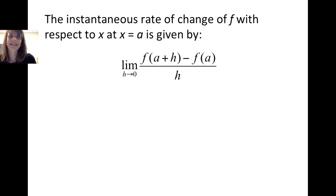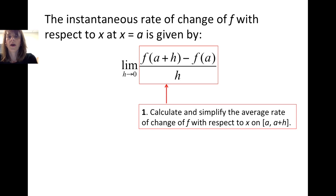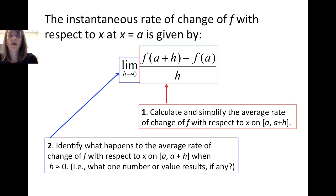Using limits, we can condense everything from the previous slide into a fairly simple, compact expression. The instantaneous rate of change of f with respect to x at x equals a is given by the limit of f evaluated at a plus h minus f evaluated at a, divided by h, as h goes to 0. In this expression we see those two steps. The difference quotient tells us to calculate the average rate of change, and the limit out in front tells us to identify what happens to that average rate of change when h is very close to 0 — in other words, what one number or value results.